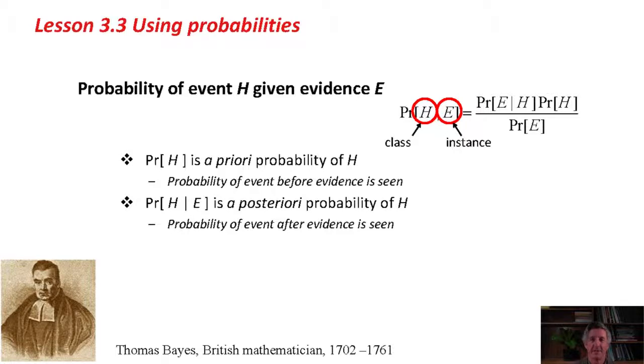The theorem is that the probability of H given E, the class given the instance, the hypothesis given the evidence, is equal to the probability of E given H times the probability of H divided by the probability of E. P by itself is called the a priori probability of the hypothesis, H. That's the probability of the event before any evidence is seen. That's really the baseline probability of the event.